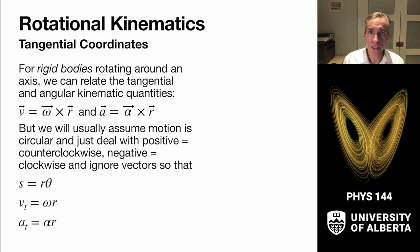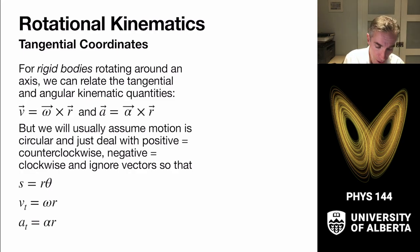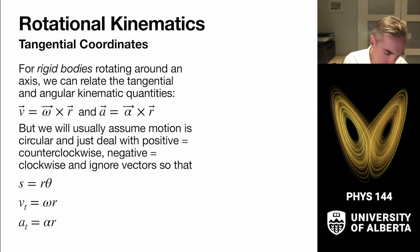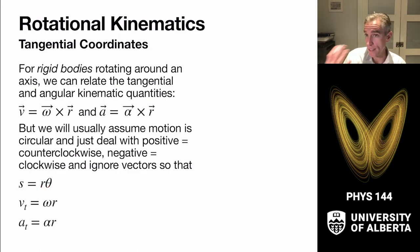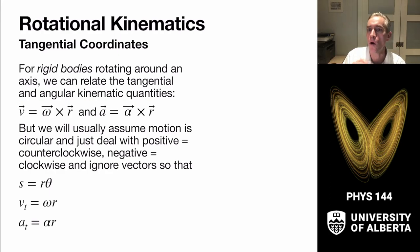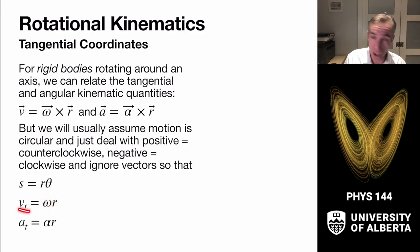The next thing we want to look into is the rotation of rigid bodies — fixed solid bodies that don't distort. We use our relations that tangential and angular kinematic quantities relate as: v equals omega cross R, and a_tangential equals alpha cross R. Since s equals r times theta, taking time derivatives for an object where the radius isn't changing gives omega times r as the tangential velocity, and alpha times r as the tangential acceleration.